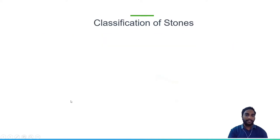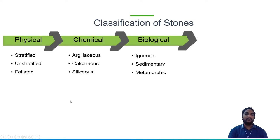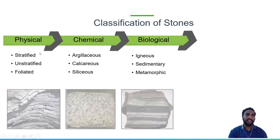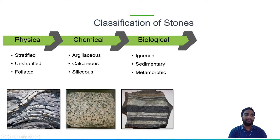Coming to the classification of stones, they are broadly divided into three types: physical, chemical, and biological — and each of these is further divided into three types. For physical classification, they are divided into stratified, unstratified, and foliated. Stratified rocks are those which can be split up in a definite plane — they exist in layers. This is an example of a sedimentary rock — these rocks can be split up very easily because of their lesser strength.